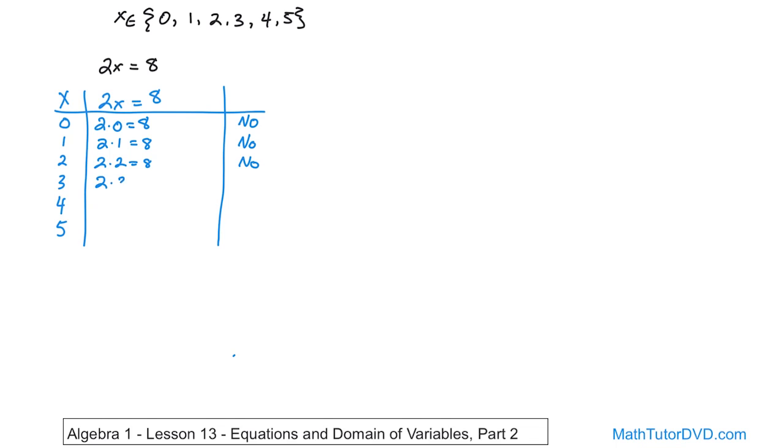Well, we have 2 times 3 is equal to 8. On the left, that would be 6 is equal to... whoops, that's not quite right. That's going to be 8 on the right. So 6 is equal to 8. That's not right. Nope.